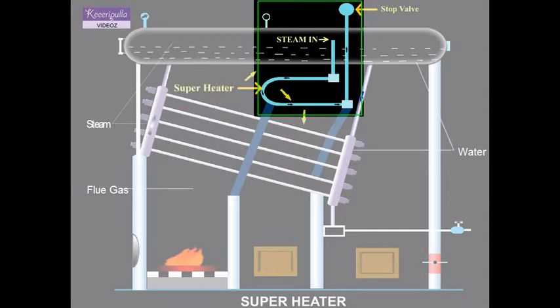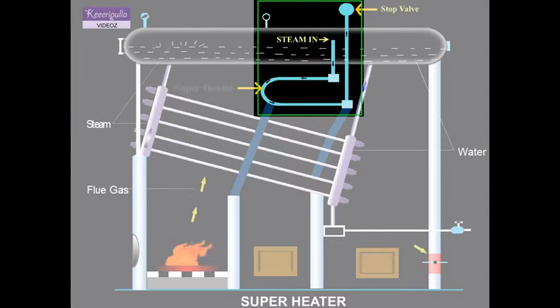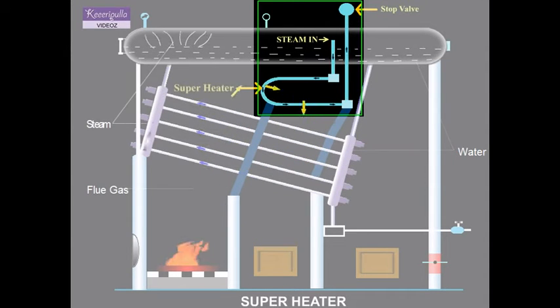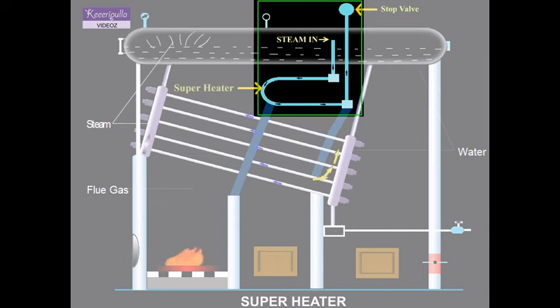Super heaters are used in boilers to increase the temperature of the steam above its saturation temperature. This is done by passing the steam through a small set of tubes and hot gases over the tubes.